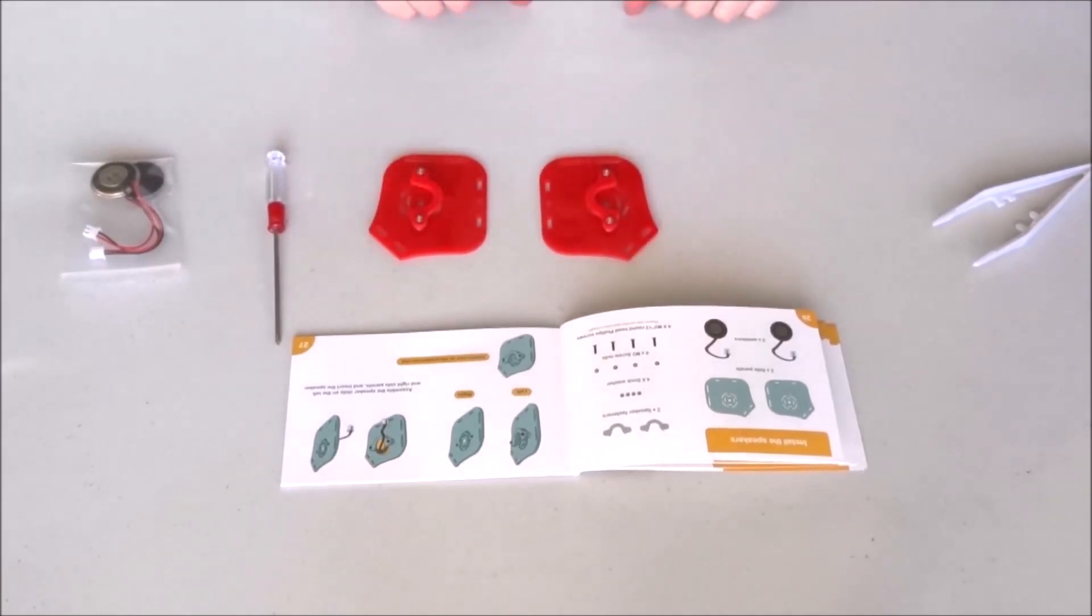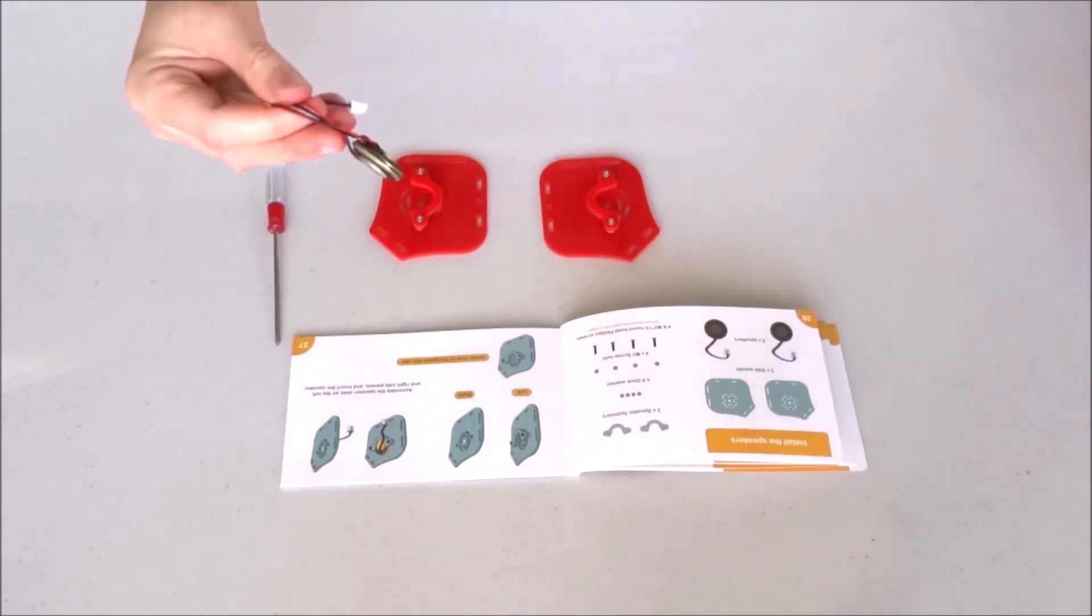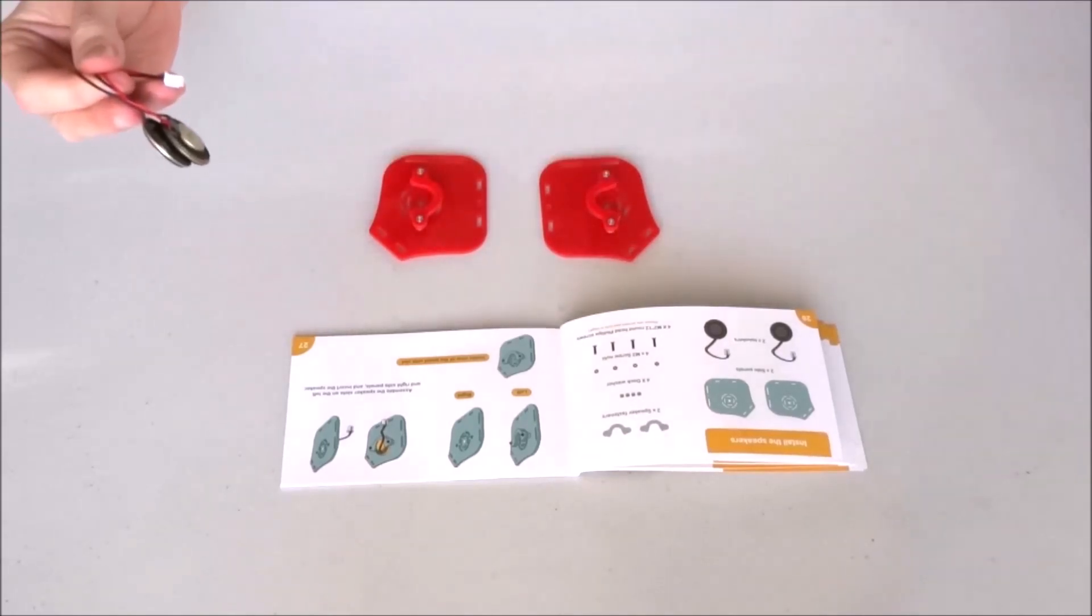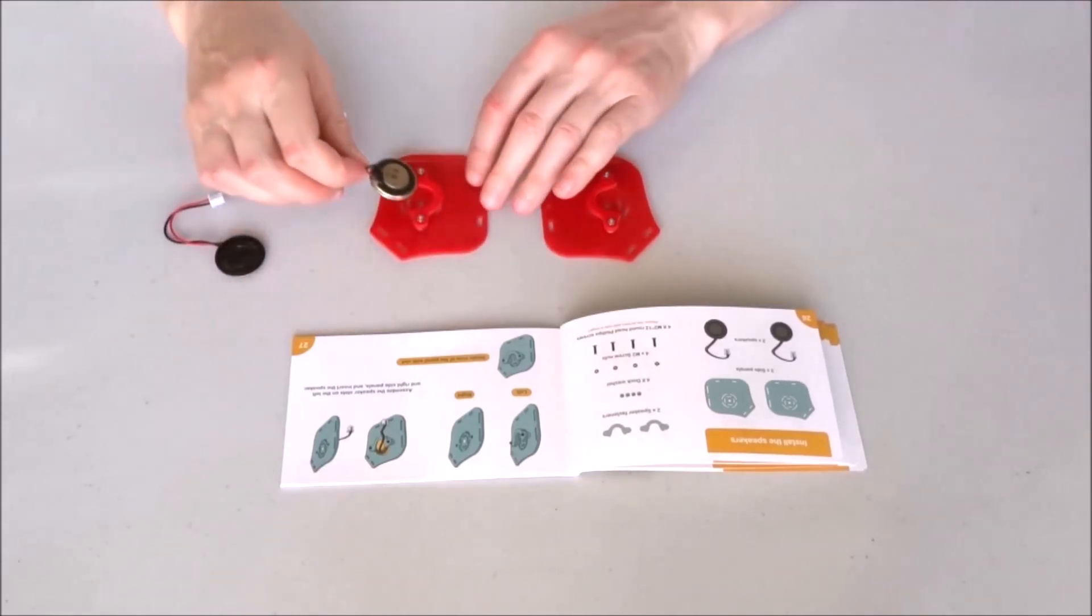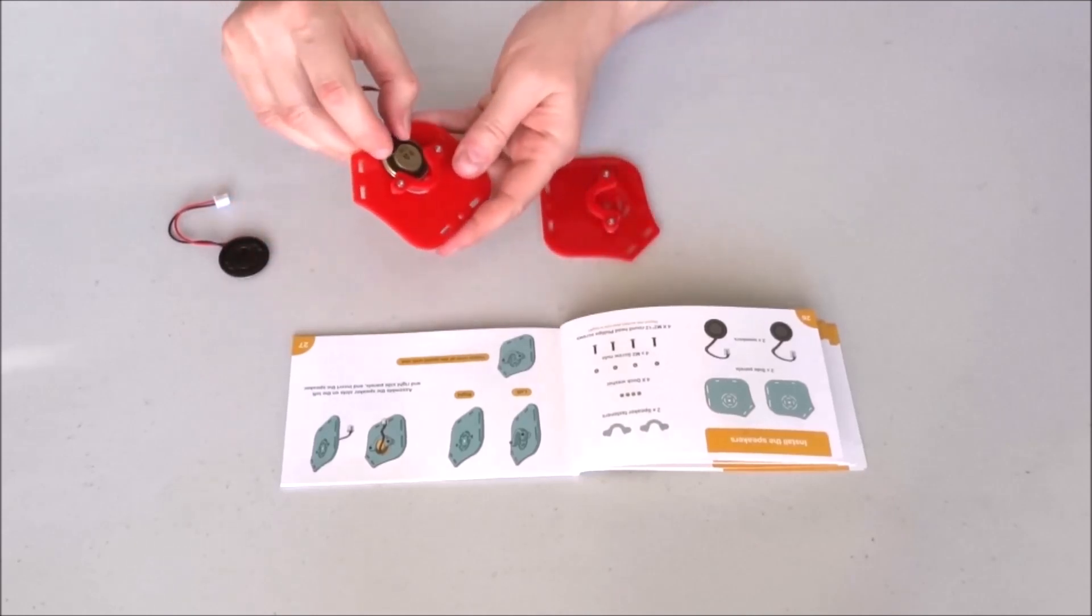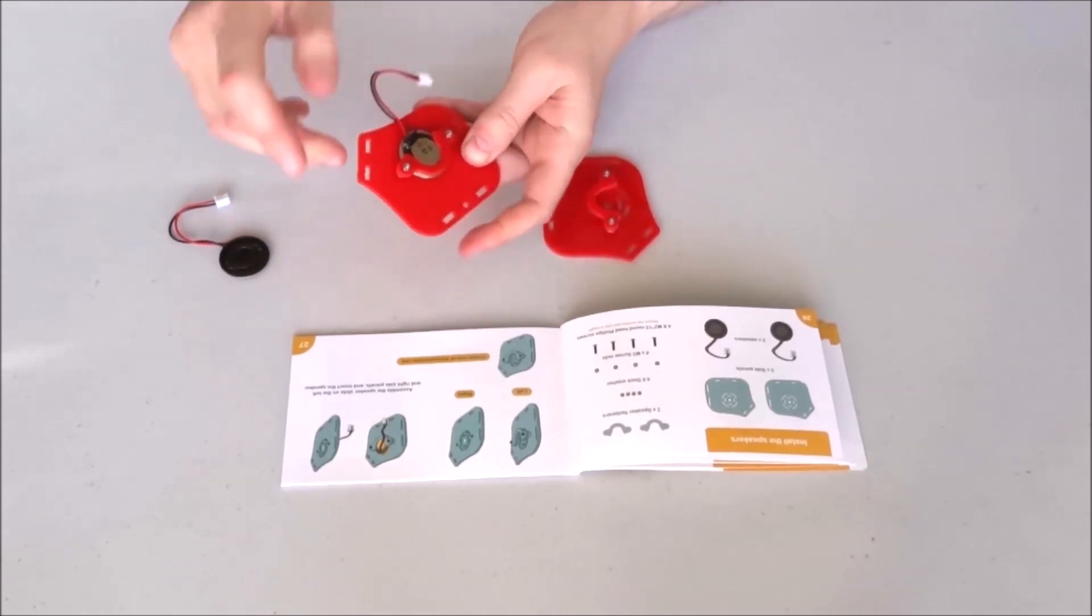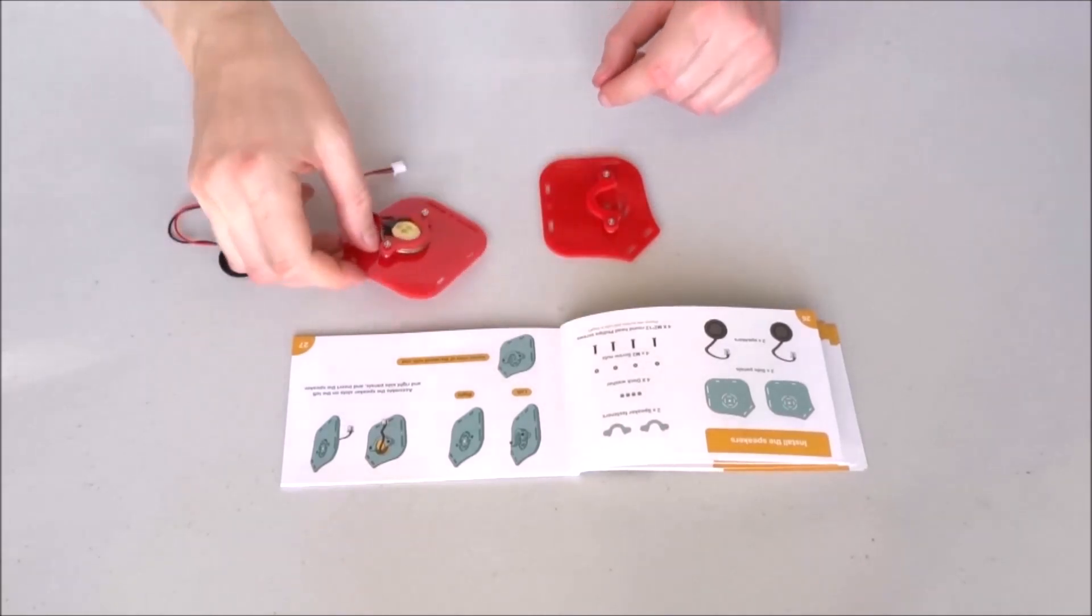The two sides of the head are done. Now I can go ahead and install the two speakers. Take them out of the bag. Pick one of them, place it like this, and slide it into the fastener. As you can see, it stays stably here.